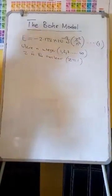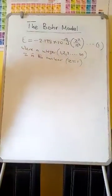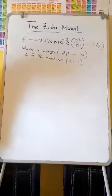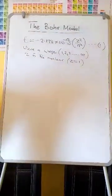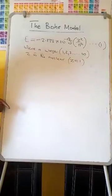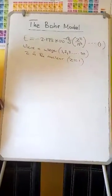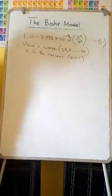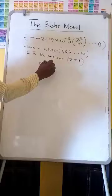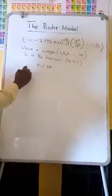The negative sign simply means that the energy of the electron bound to the nucleus is lower than it would be if the electron were at an infinite distance from the nucleus, where there is no interaction and the energy is zero. So as n approaches infinity, the energy of the system becomes zero.